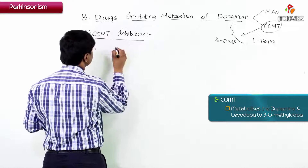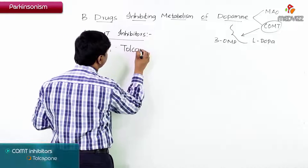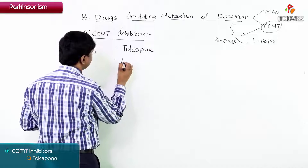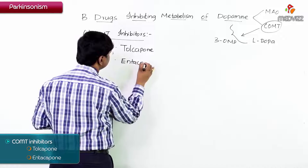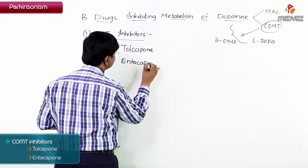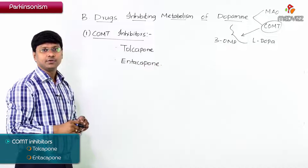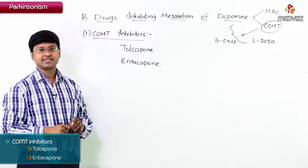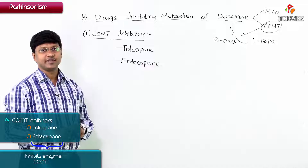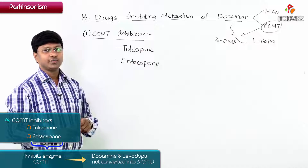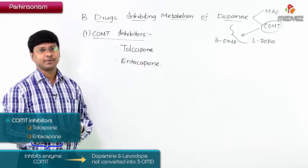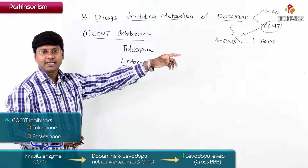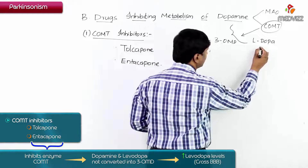To counter this, we give drugs that inhibit the COMT enzyme. We have two drugs for this: tolcapone and entacapone. These drugs inhibit the COMT enzyme, thereby preventing dopamine and levodopa from being converted into 3-O-methyldopa, and so the levels of levodopa are increased.